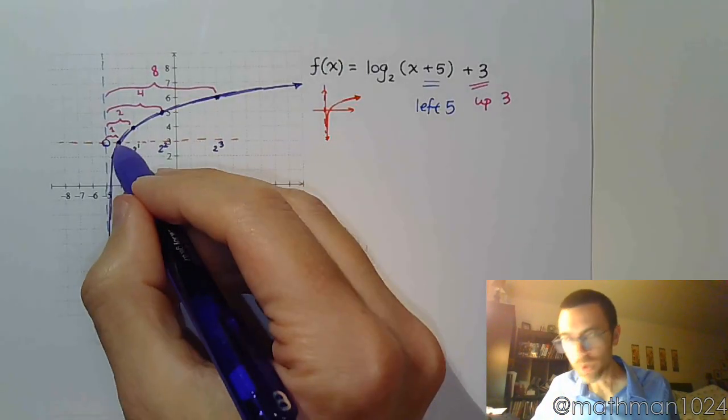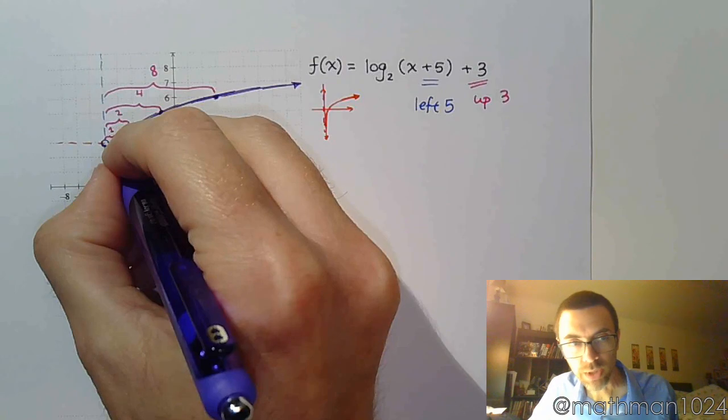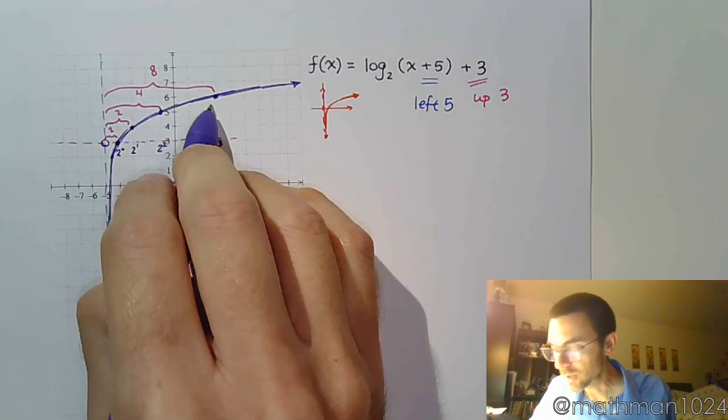Again, start with the base point here of (1, 0) and build using your base. So 1 times 2 is 2, times 2 is 4, times 2 is 8.